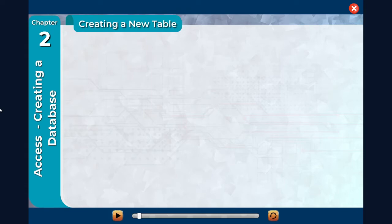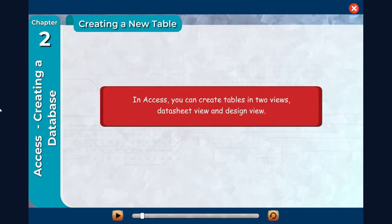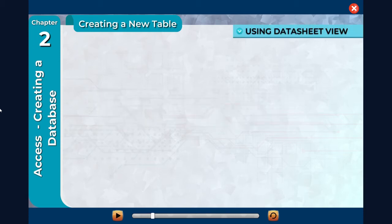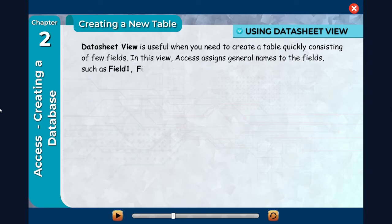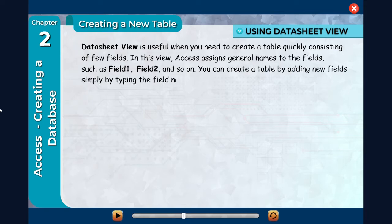Creating a new table. In Access, you can create tables in two views: Datasheet View and Design View. Using Datasheet View: Datasheet View is useful when you need to create a table quickly consisting of few fields. In this view, Access assigns general names to the fields such as Field 1, Field 2, and so on.